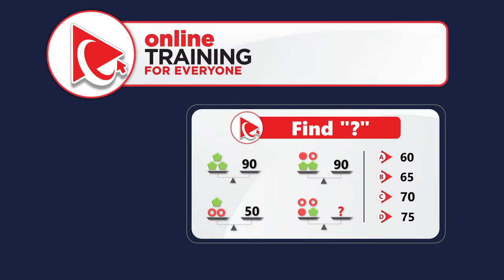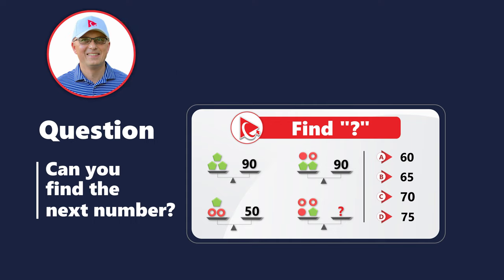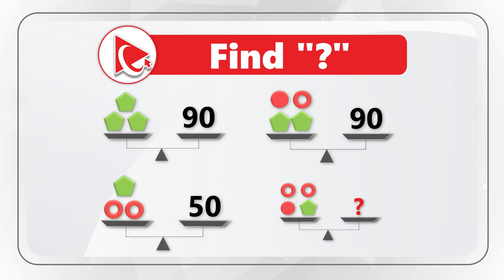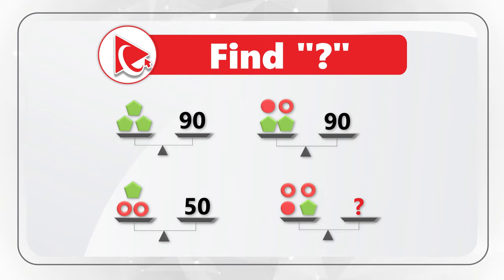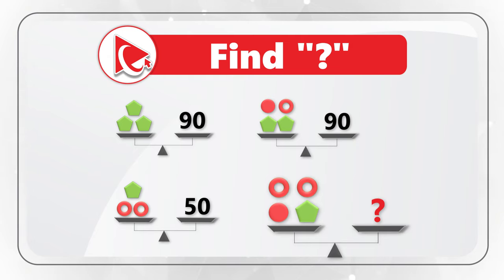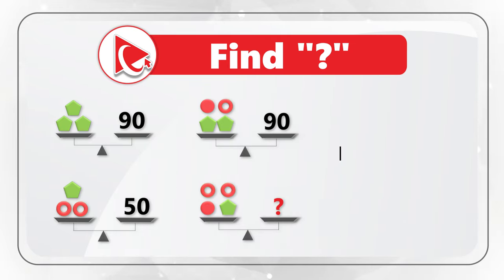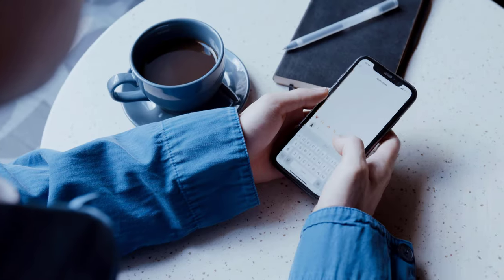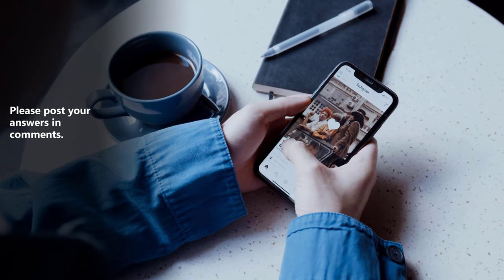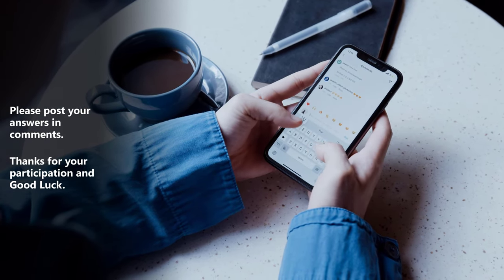I have something you might not have been expecting — a practice question. You need to find the missing number and you're presented with four scales. Three scales have items on the left and a number on the right to make them equal. The fourth scale has items on the left and a missing number as a question mark on the right. Choices: A (60), B (65), C (70), D (75). Pause this video for 10–15 seconds to see if you can come up with the solution, then post your answer in comments so I can give you feedback. Thanks for participating and good luck.